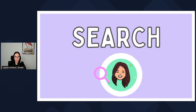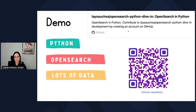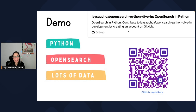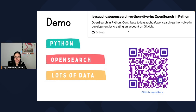Now we're going to see how we can write search queries with OpenSearch. For that, I have a demo here. I will put the link now but will also share it at the end of the slides. For this demo, we're going to be using Python, an OpenSearch cluster which is already running, and we're going to be using lots of data. For the data, I'll be using recipes — it's almost lunchtime so I'm quite hungry. There are almost 20,000 recipes. You can find the data in this demo repository as well.